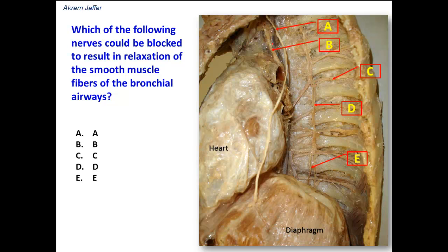Nerve A is the phrenic nerve. It descends from the neck, passes into the superior mediastinum, and then in front of the root of the lung, along the pericardium to the diaphragm. The other nerve is the vagus nerve, again descending from the neck into the superior mediastinum, but passing behind the root of the lung.